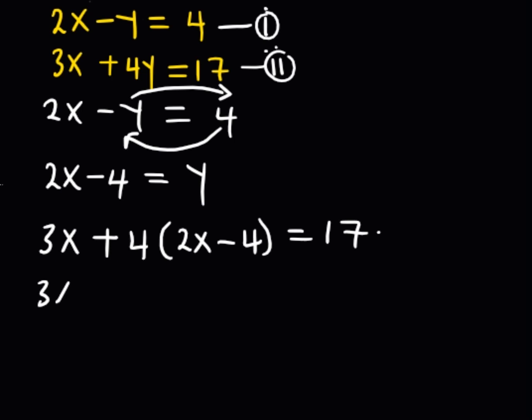So I'm going to have 3x. I distribute this 4 equally throughout this bracket, so that is 8x minus 16, everything is equal to 17.